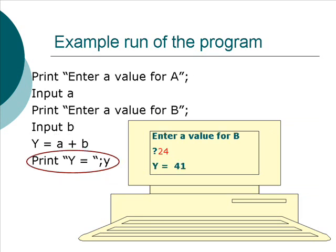Now it executes the last instruction: Print Y equals semicolon Y. In this case, it printed the 'Y equals' exactly as it was between the quotes—it just printed that out literally. The semicolon is just a separator between that string and the variable.